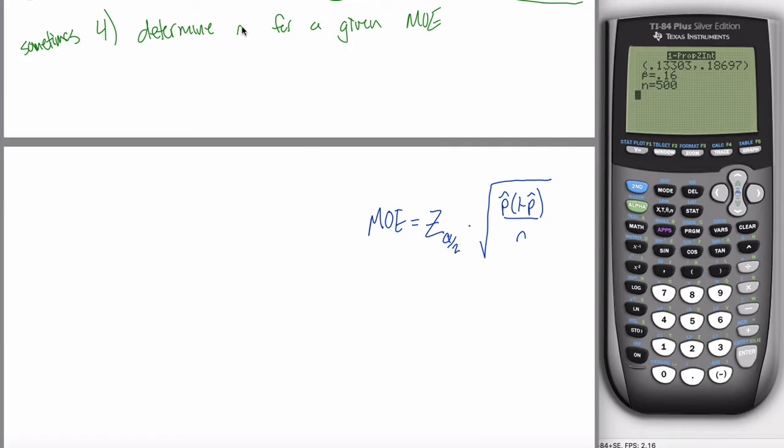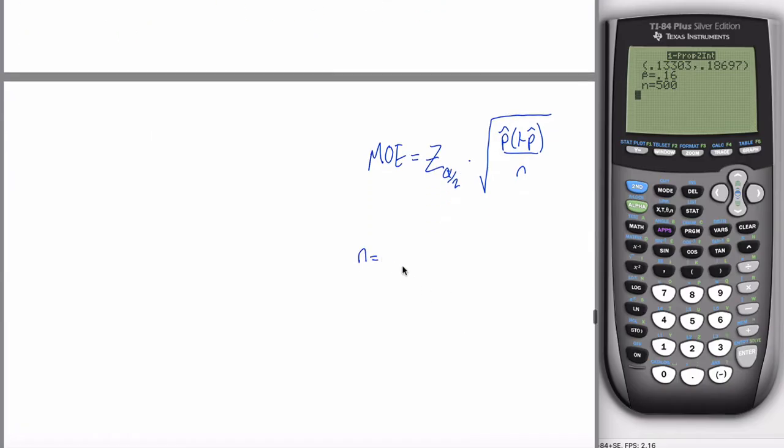If we're interested in n and we know the margin of error, this formula gives me the margin of error if we know n. But what if you knew the margin of error and you wanted to find n? I can solve for this thing algebraically. I can get the n all by itself. I could square both sides of the equation to get rid of the square root, make this part squared, and then I can multiply the n up here and divide over here. I could solve for n algebraically and get that n is equal to something squared.